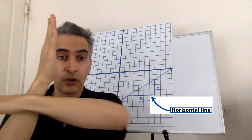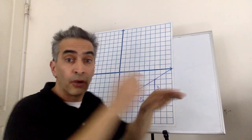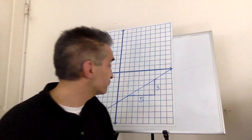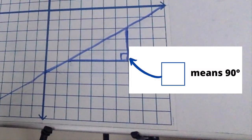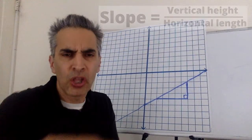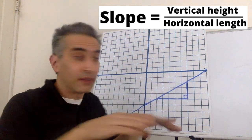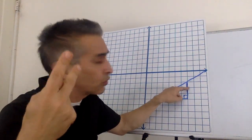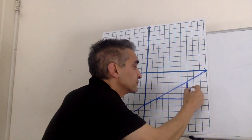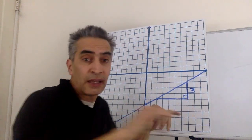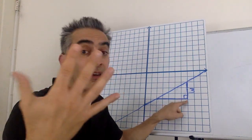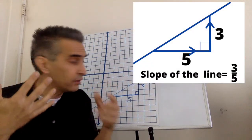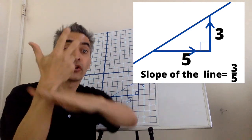This horizontal line and this vertical line mean that this angle equals 90 degrees. What does the slope mean? It means the vertical height divided by the horizontal length. This vertical height measures one, two, three. This horizontal length measures one, two, three, four, five. The slope equals three divided by five, or three-fifths.